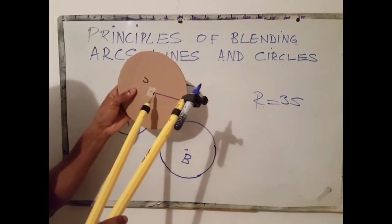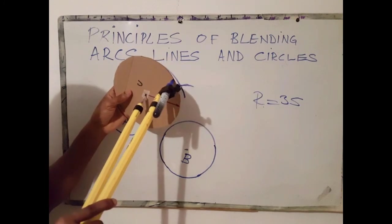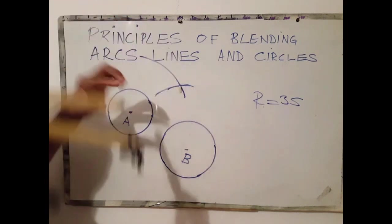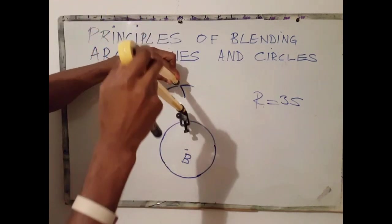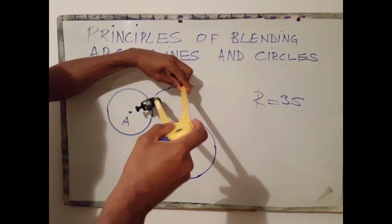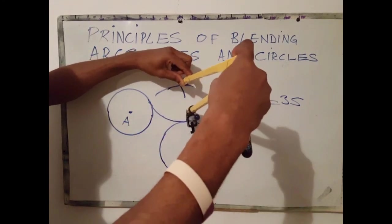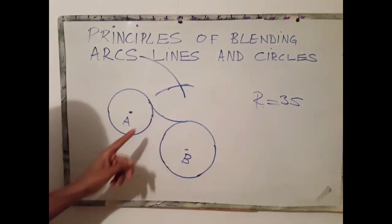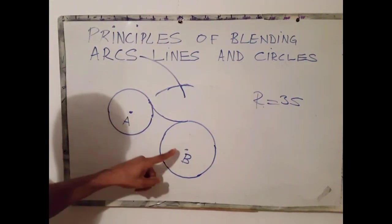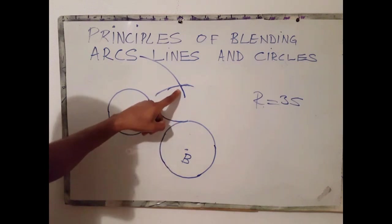Next, I would readjust my compass to this radius. At point where both centers meet, that would have been my arc. So the principle says that we will need two centers in order to find the third center.